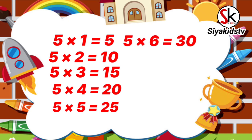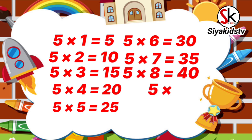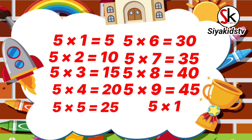5 times 6 is 30, 5 times 7 is 35, 5 times 8 is 40, 5 times 9 is 45, 5 times 10 is 50.